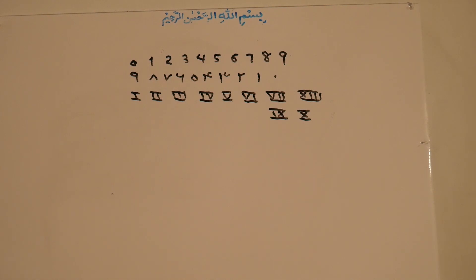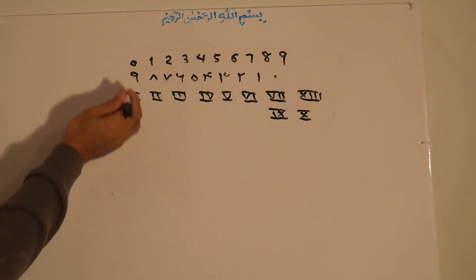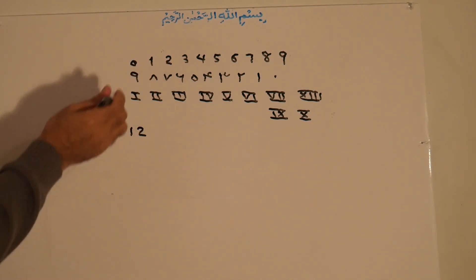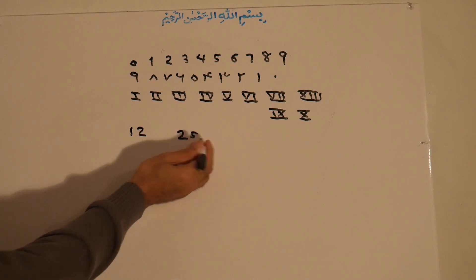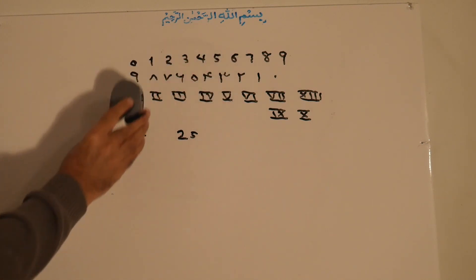From these basic numbers, we can make any number. For example, if you want to make 12, we put one beside two. If you want to make 25, we put two beside five. The Roman numerals don't have too much application these days — some people use them in watches, clocks, and in serial numbers or chapter titles of some books. But mostly, people use the standard digits.